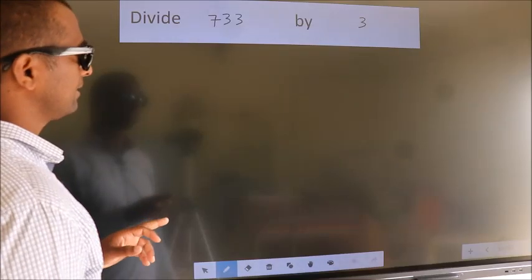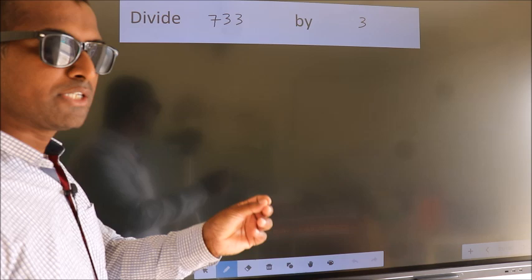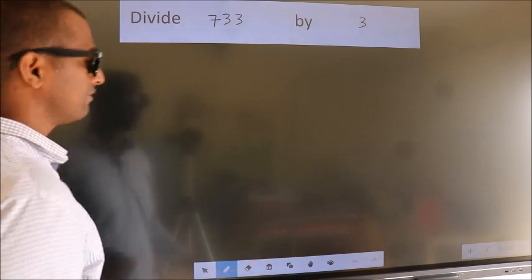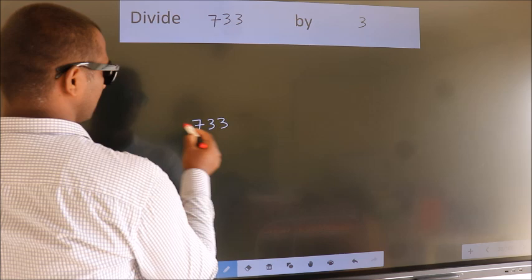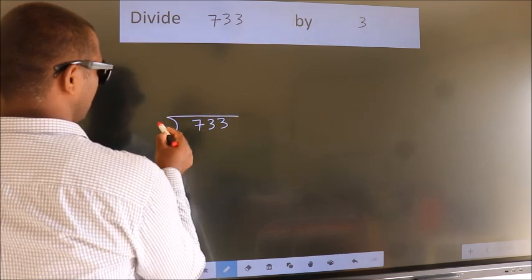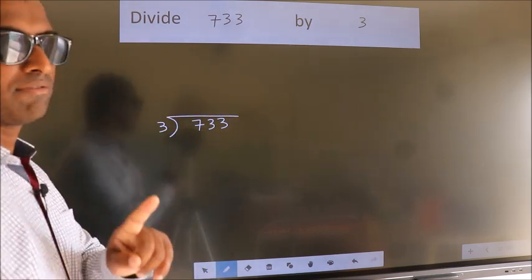Divide 733 by 3. To do this division we should frame it in this way. 733 here, 3 here. This is your step 1.